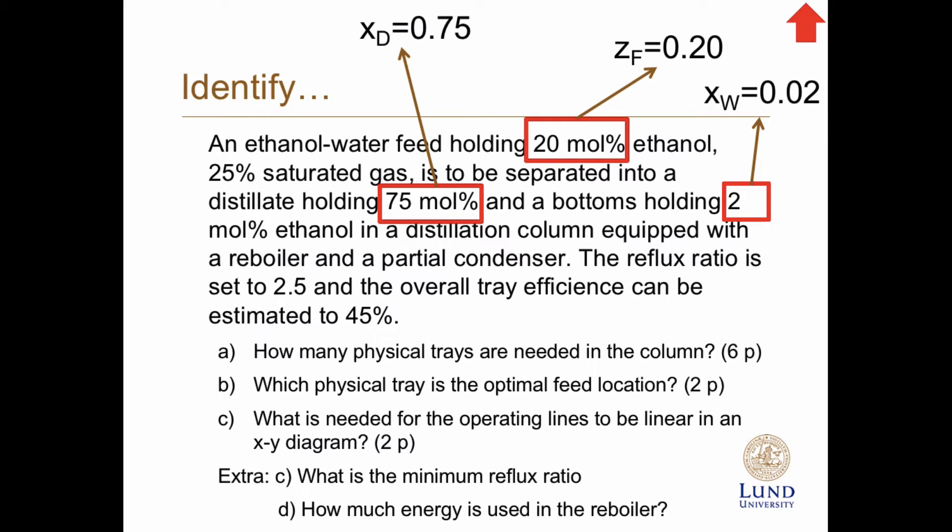The bottom should hold 2 mole percent, so xW is 0.02. It's 25 percent saturated gas in the feed, so we need to evaporate 75 percent. So q equals 0.75. The reflux ratio is 2.5.